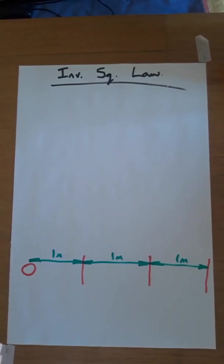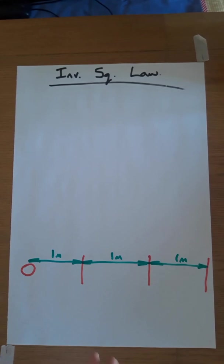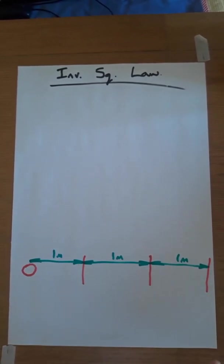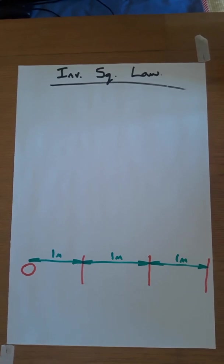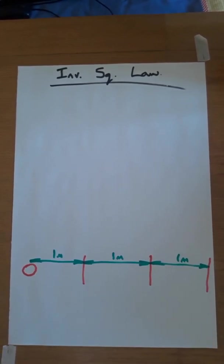We all know that the further we get away from a light source, the dimmer its effects are. And the inverse square law helps us to calculate the amount of light that is falling on a surface, the further we get away from the light source.